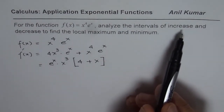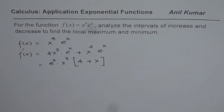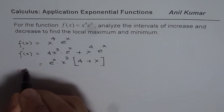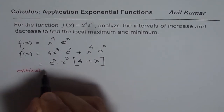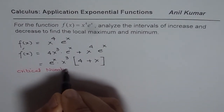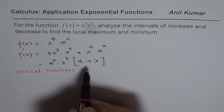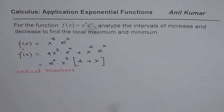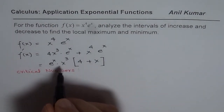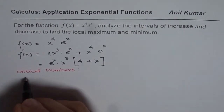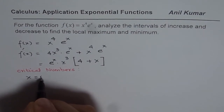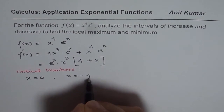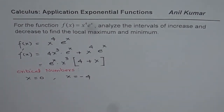To analyze the intervals of increase and decrease we need to find critical points. Critical numbers are where the derivative could be 0 or undefined. In this case we get zeros at two places: when x³ = 0, giving x = 0, and when x = −4. So these are the two critical numbers.